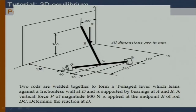These are two bearings here, and this is a T-shaped welded bar. So this total body is continuous — there is no breaking here. It is only supported by two bearings at A and B. And we want to find out the reaction that is coming from the wall.